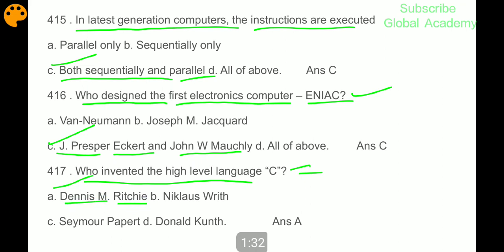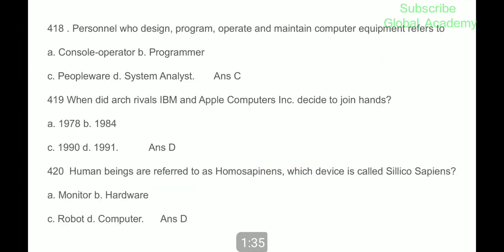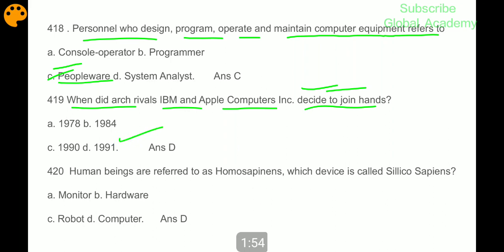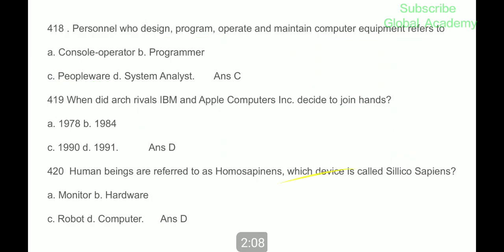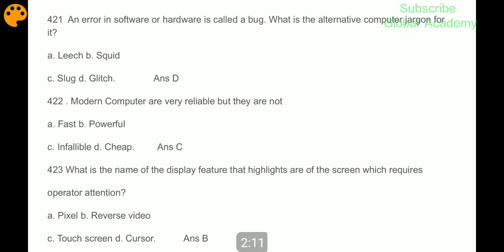Personnel who design, program, operate and maintain computer equipment refers to peopleware. When did Olivetti, IBM and Apple computers decide to join hands? In 1991. Human beings are referred to as homo sapiens. Which device is called silico sapiens? Computers are called silico sapiens.